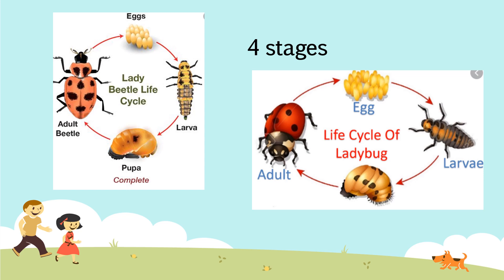Then we have the pupa — the stage where the larva turns into the adult. And then you have the adult insect; in this case, we have the beetle and the ladybug. They are similar to the life cycle of the butterfly because of the four stages.